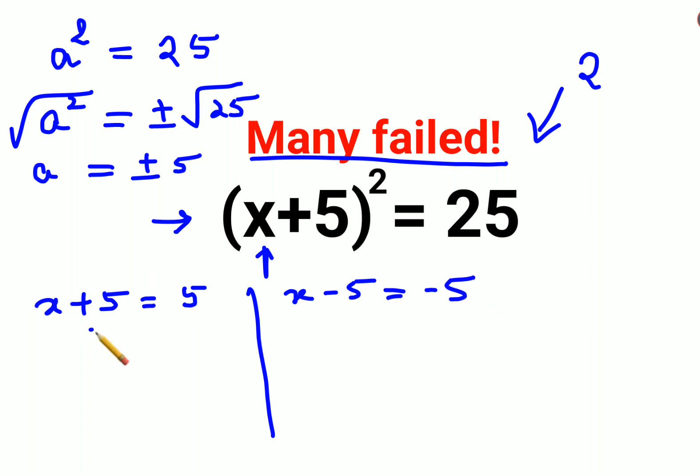Now subtracting 5 on both sides: x plus 5 minus 5 gets you 0. So x plus 0 just gets you x, and 5 minus 5 also gets you 0. This is one answer.